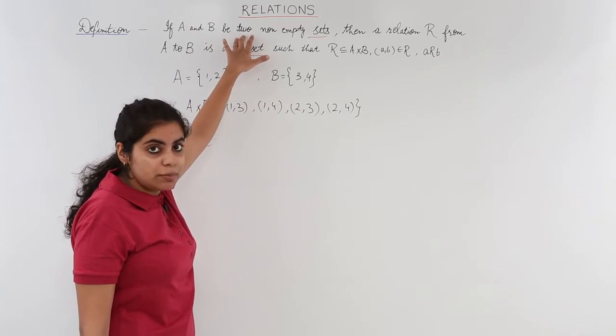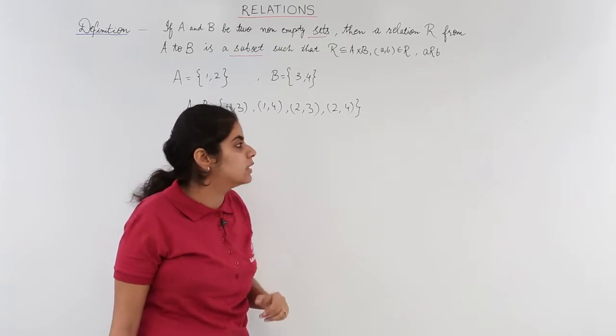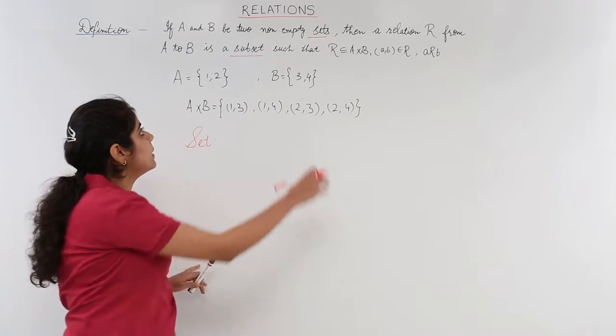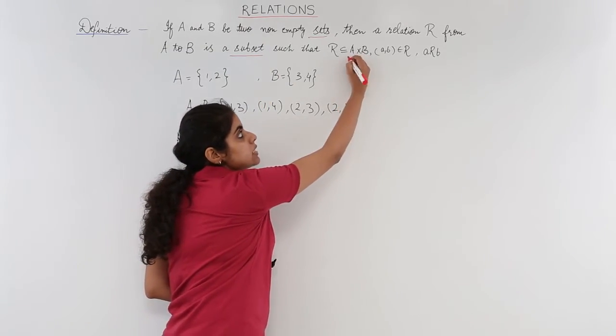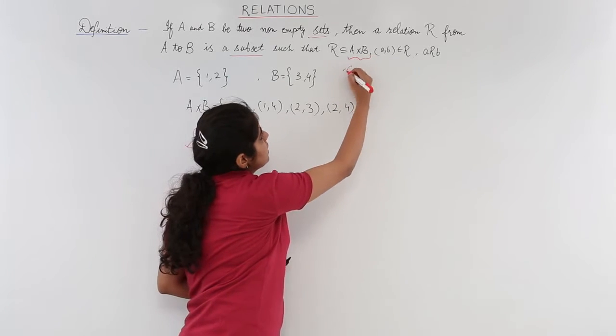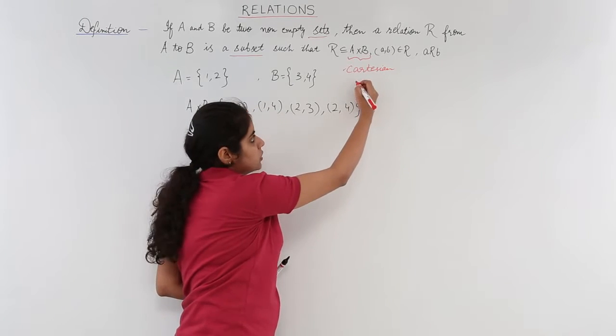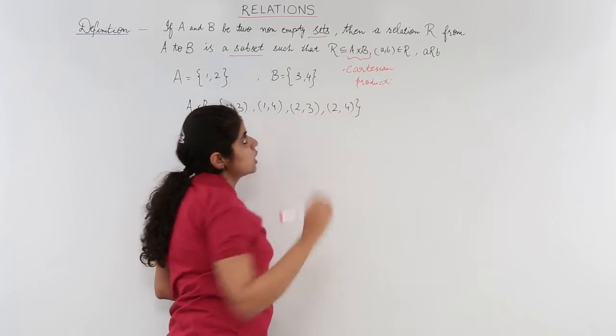So, if we have two non-empty sets which have some or the other value, some or the other element, then a relation would be what? It would be basically the subset of this. This is nothing but the Cartesian product.